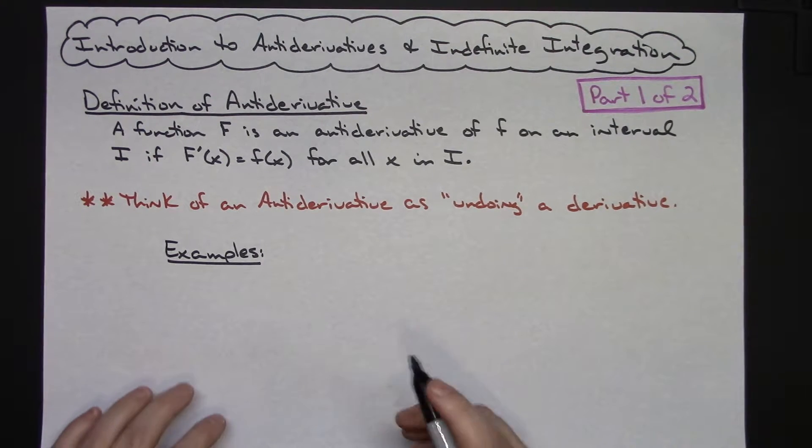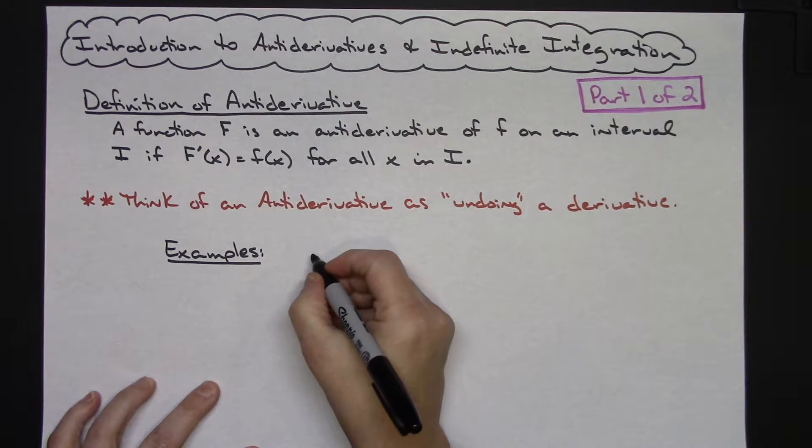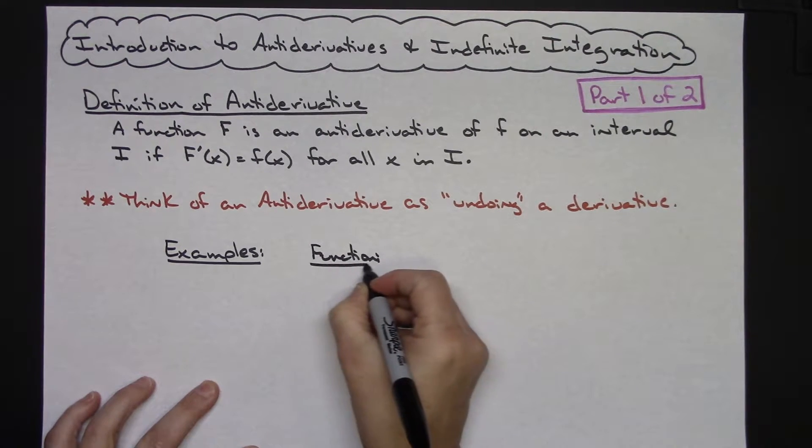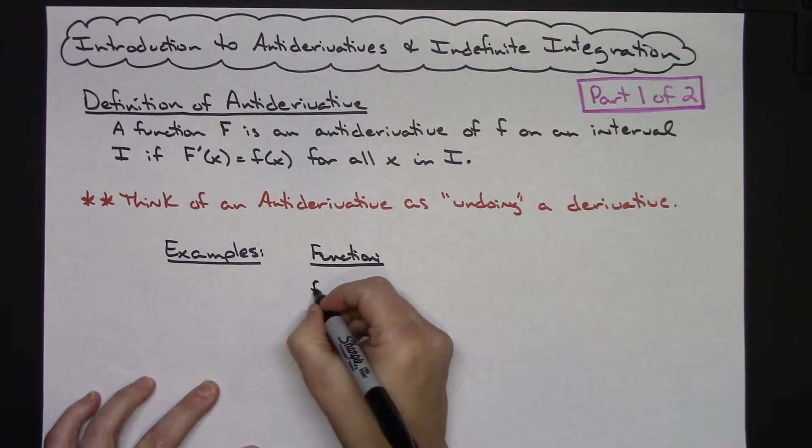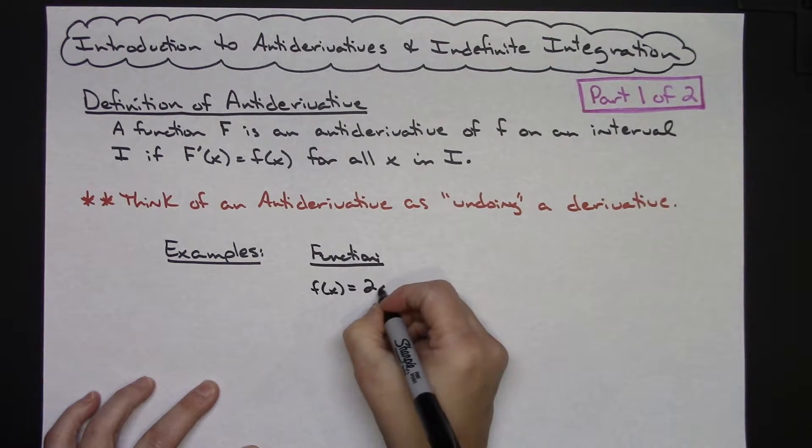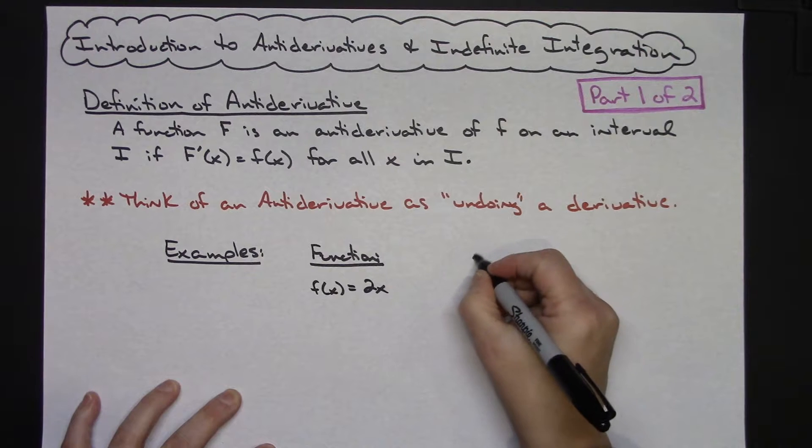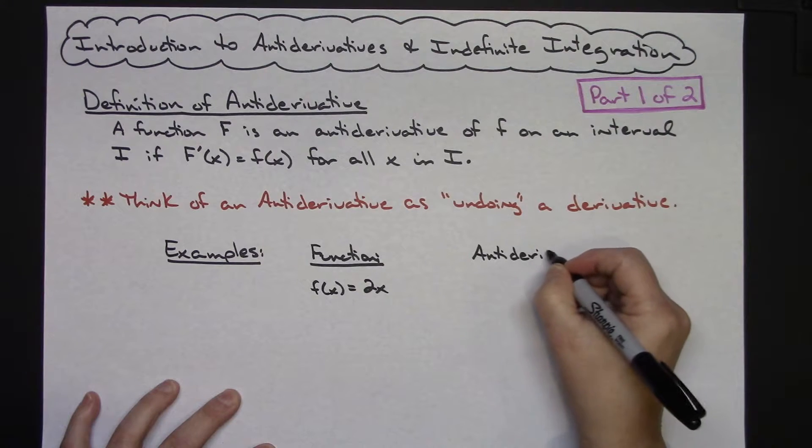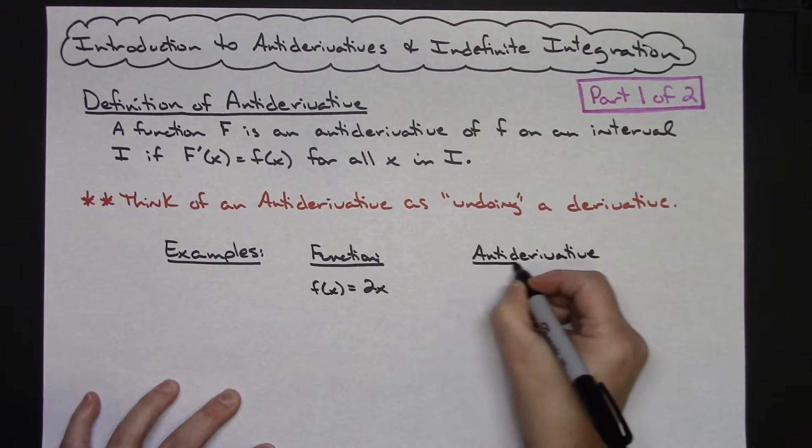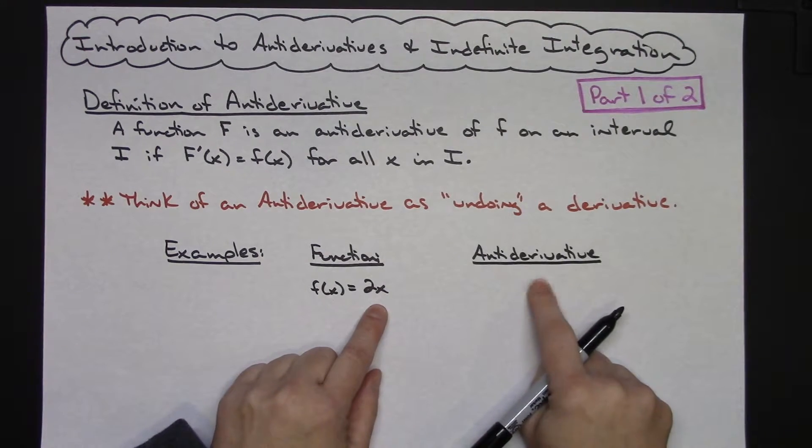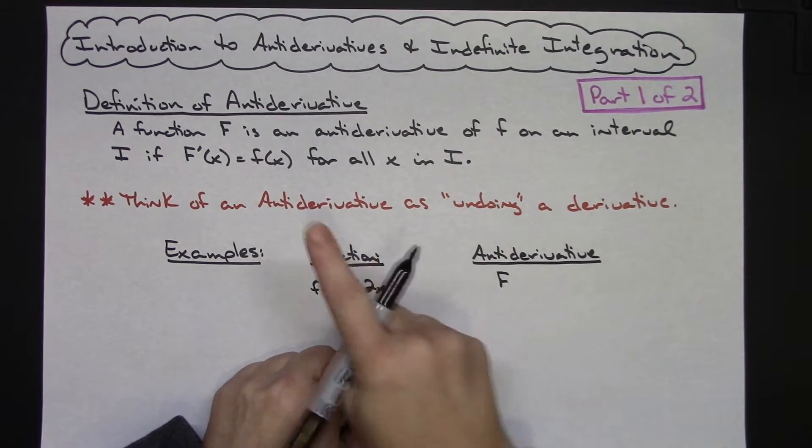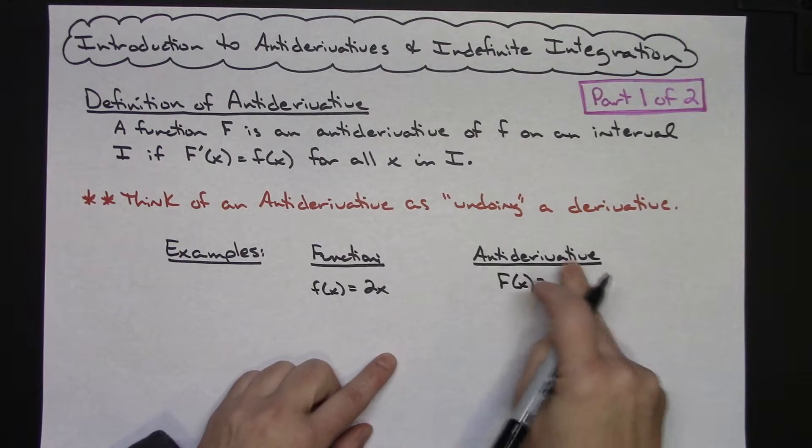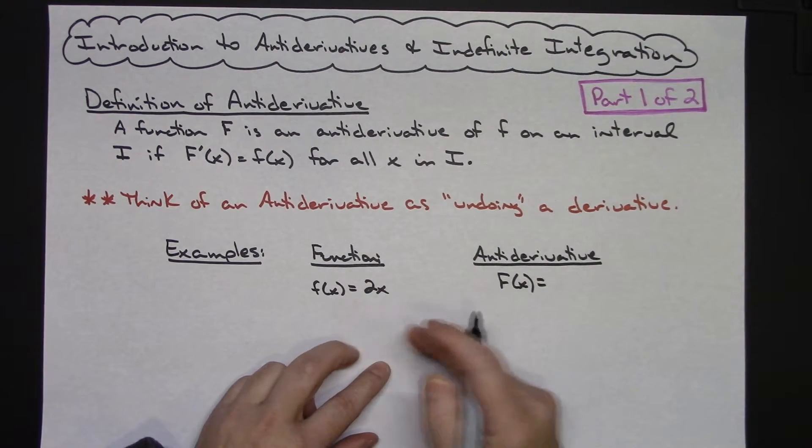So for some really simple examples here, let's say I've got some function here, and we'll make it a really simple function like f of x equals say 2x. Now if I want to try to find the antiderivative just by doing a trial and error, think about process, that sort of thing, I need to come up with a capital F, according to this definition, capital F of x - some function that when I took the derivative, I end up with 2x.